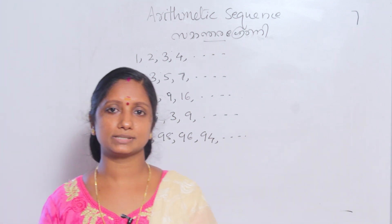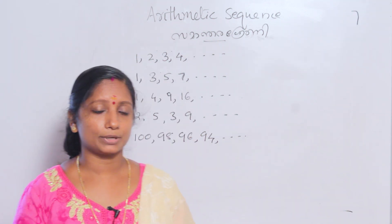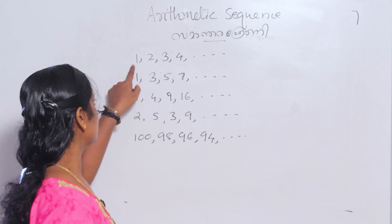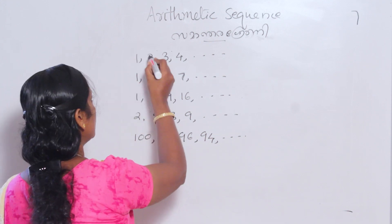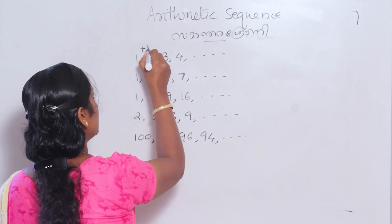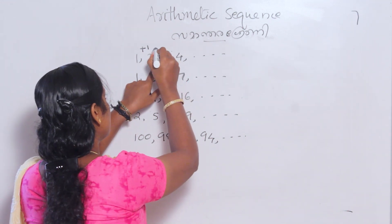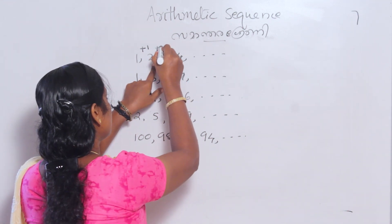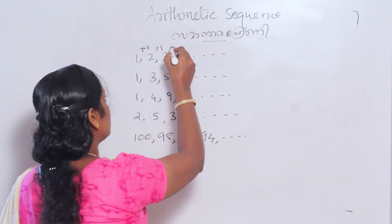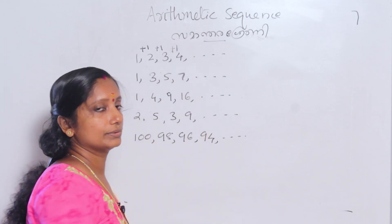We have these sets of numbers here. Let's take the first set of numbers. The first number is 1, the second number is 1, the third number is 1, and the fourth number follows similarly.